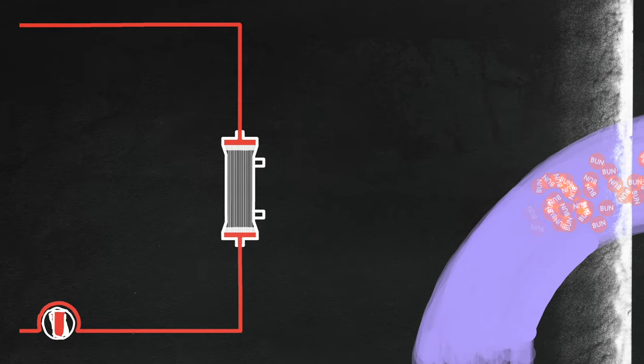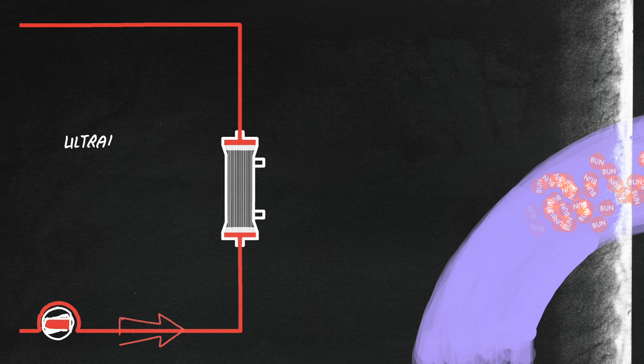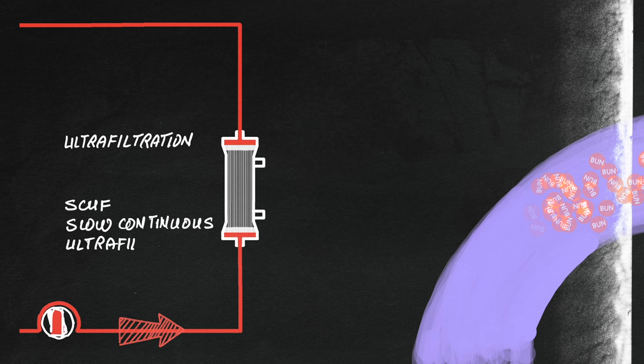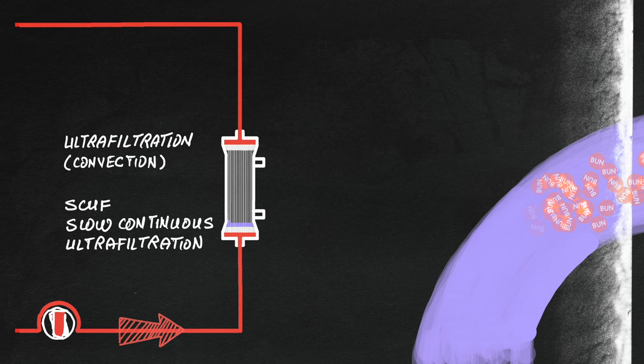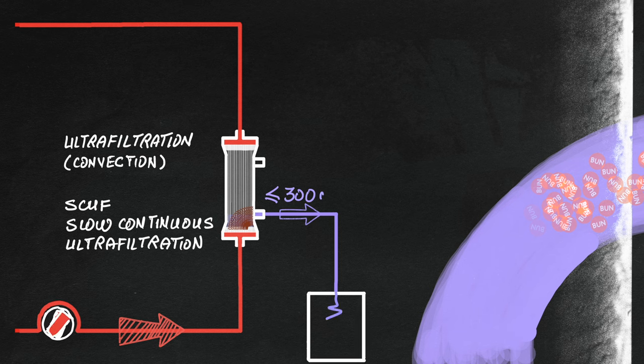The simplest mode of kidney support is a slow continuous or isolated ultrafiltration, which in effect is convection process, where plasma water is filtered across the membrane, typically at rates of 300 mL per hour or less, for volume control.